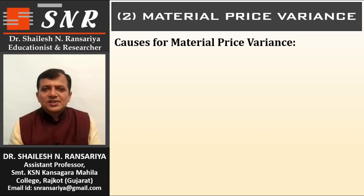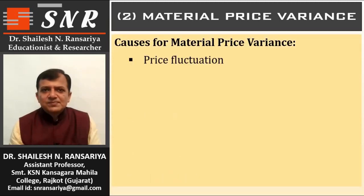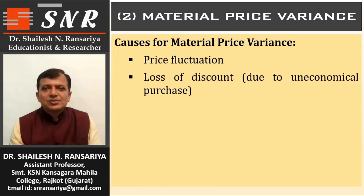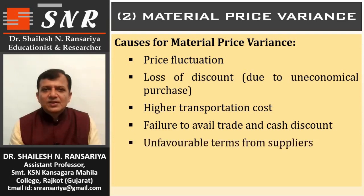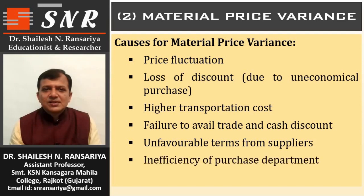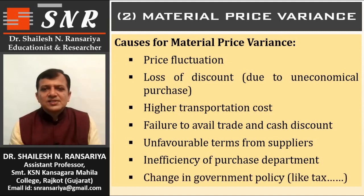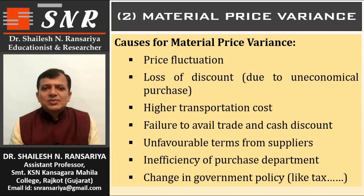Causes for Material Price Variance include: price fluctuation; loss of discount due to uneconomical purchase; higher transportation cost; failure to avail trade and cash discount; unfavorable terms from suppliers; inefficiency of the purchase department; and change in government policy like taxation. For example, when India introduced GST, it directly affected the price of raw materials.